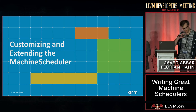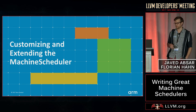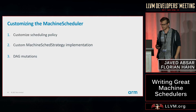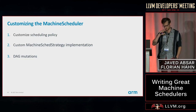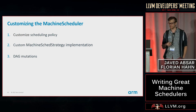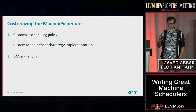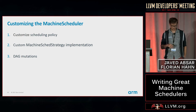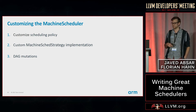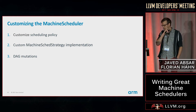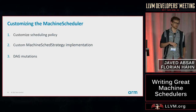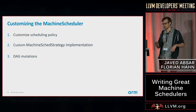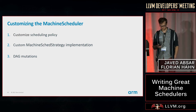One of the advantages of the machine scheduler framework is that it allows you to customize and extend it, writing your own scheduling strategies. There are three things you can do to customize scheduling behavior: customized scheduling policies, which are high-level directions for the machine scheduler; implementing custom machine schedule strategies, which give you flexibility to implement your own scheduling algorithms and custom heuristics; and DAG mutations, which allow you to add constraints to the dependency graph before scheduling that cannot be expressed using the scheduling model TableGen definitions.